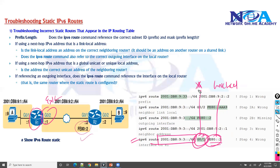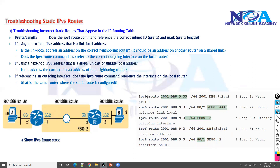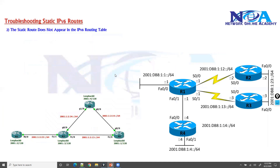These are some of the common misconfigurations you'll see with IPv6 static routing. Depending on what type of configuration you're doing, make sure each element is correct. If you can see routes in the routing table but they are misconfigured, those are the things to check. Next, we'll look at what to do when routes are not appearing in the routing table at all, even when the configuration appears to be correct.